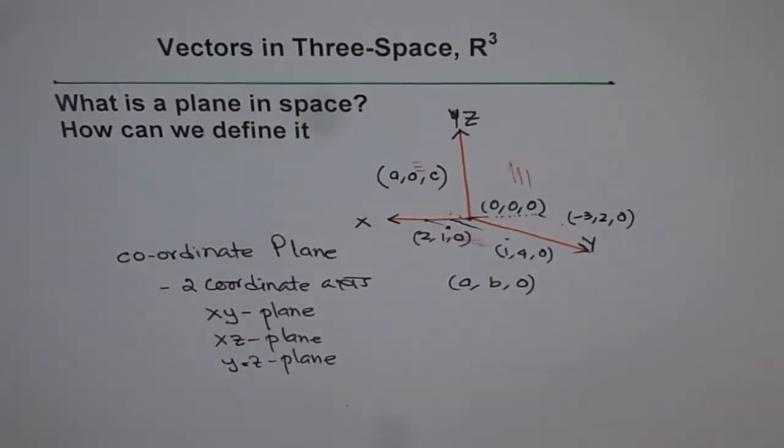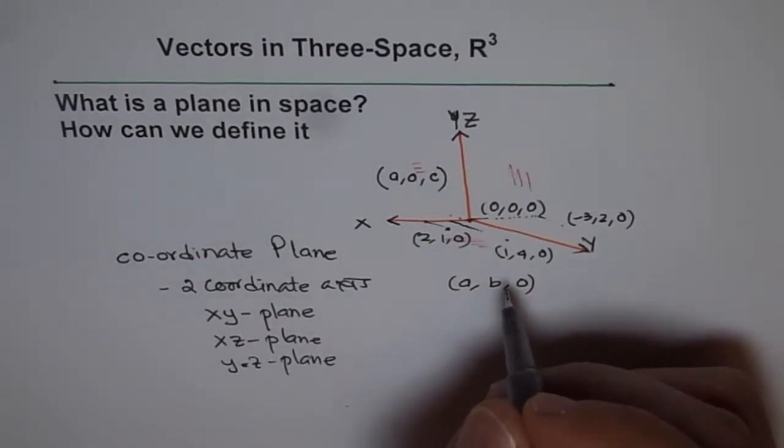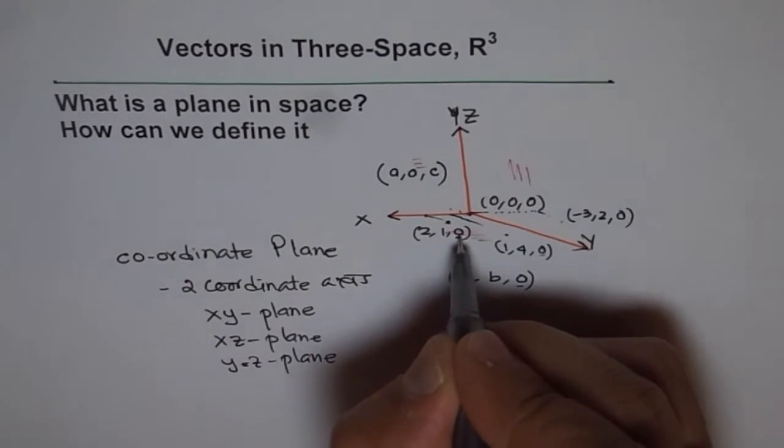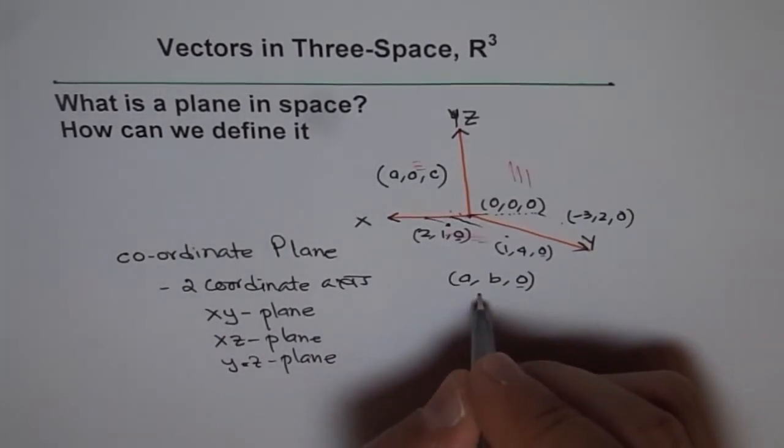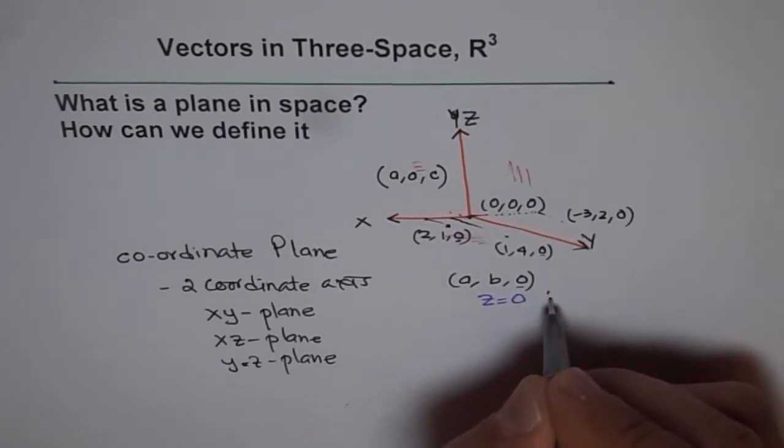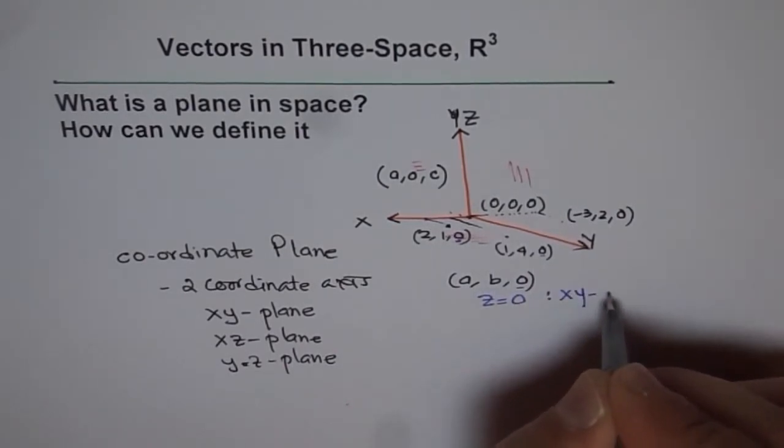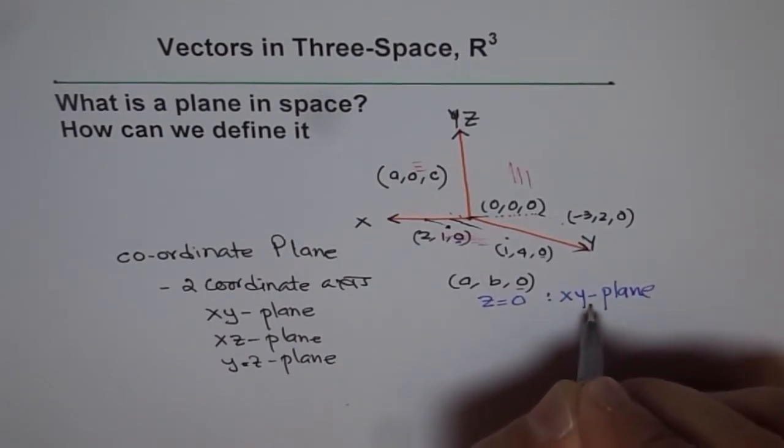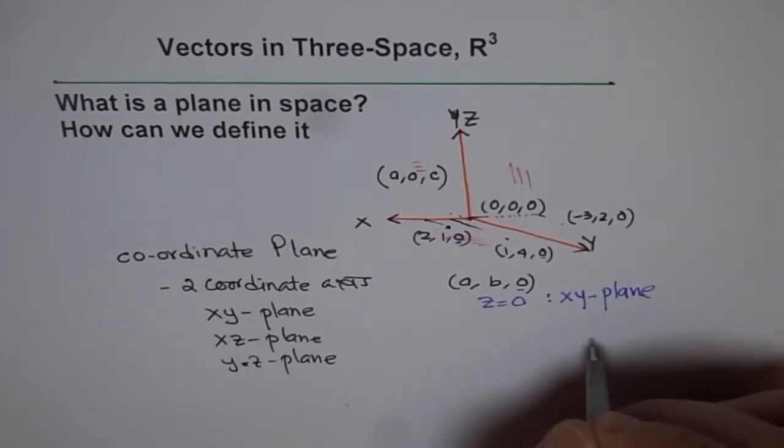Well, equation is something like this. You will observe all these points have one thing in common and that is Z equals to zero. If I write Z equals to zero, it means XY plane. So Z equals to zero becomes the equation for XY plane. That's kind of very interesting observation.